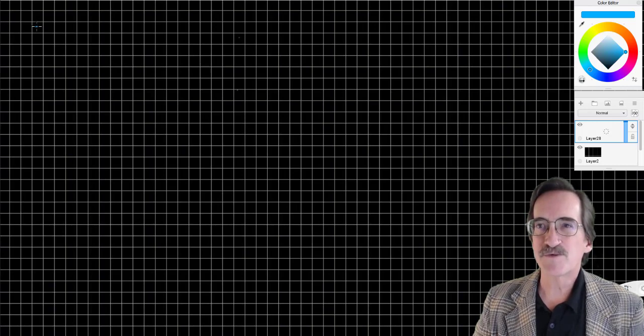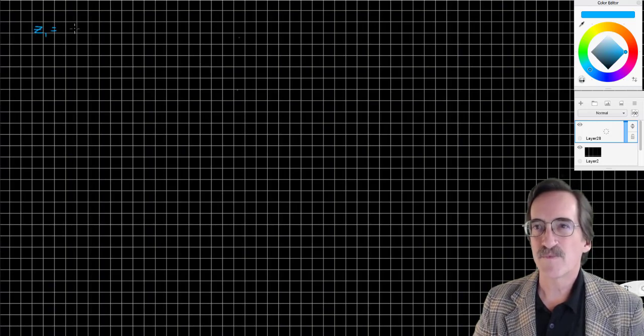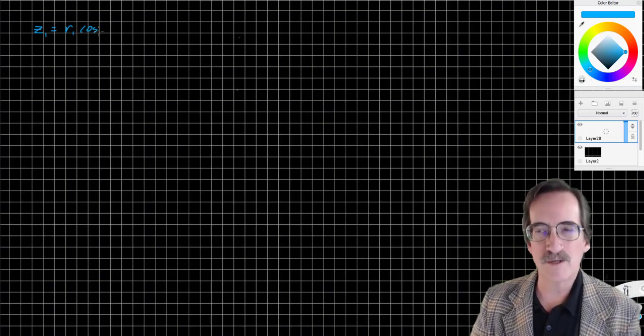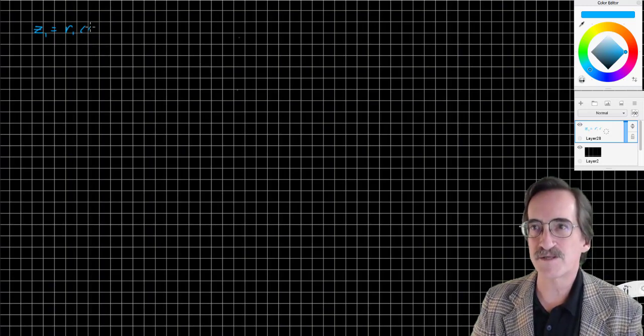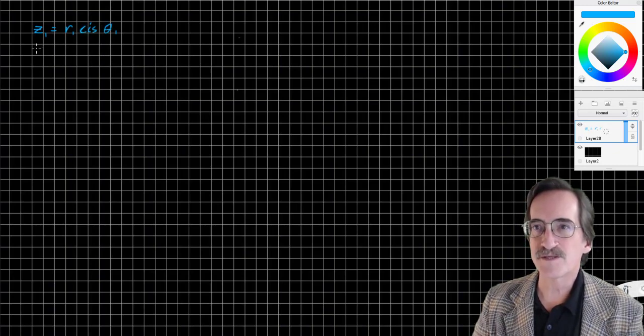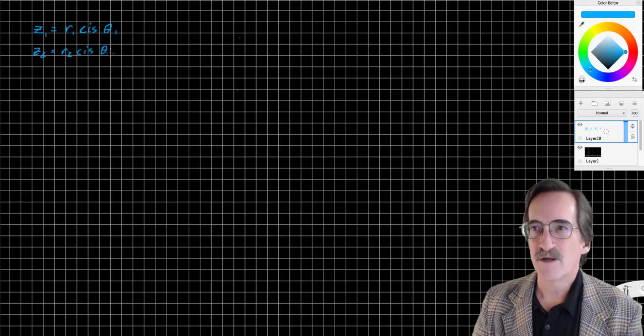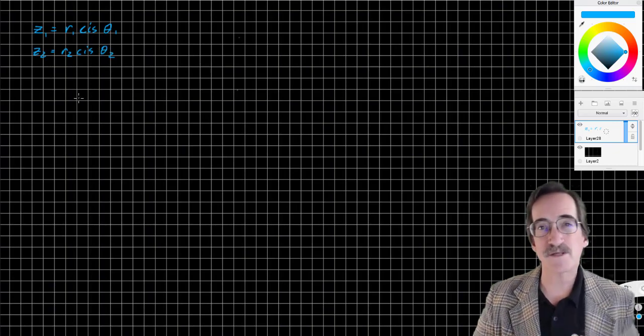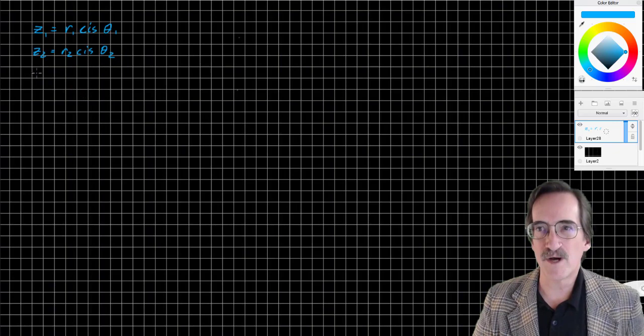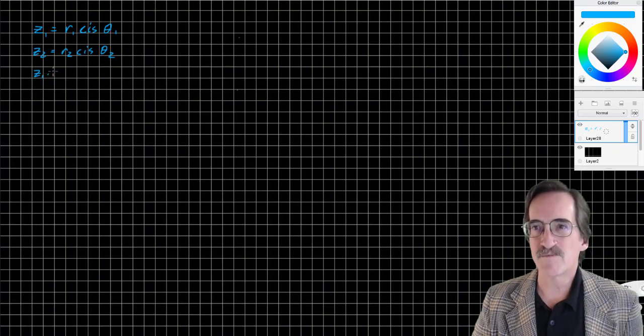So let's say we have two complex numbers, Z1, which is R1 cis theta 1, and Z2 is R2 cis theta 2. So we have two complex numbers. We're going to multiply them. We're going to find the product, Z1 times Z2.